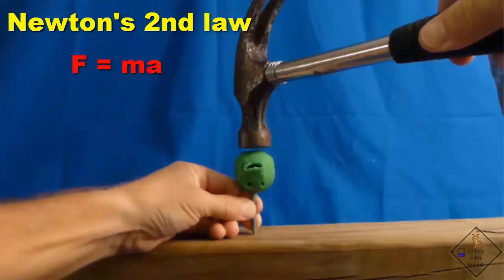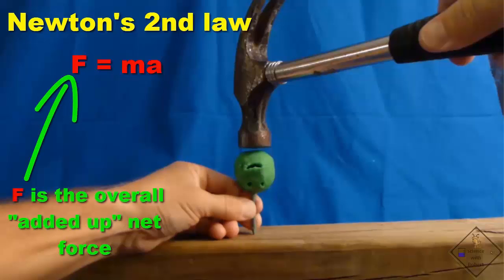Newton's Second Law is F equals MA, and really what it is saying is that if all the forces acting on an object are added up, and if they do not cancel each other out, there will be an overall net force exerted on the object of mass M.